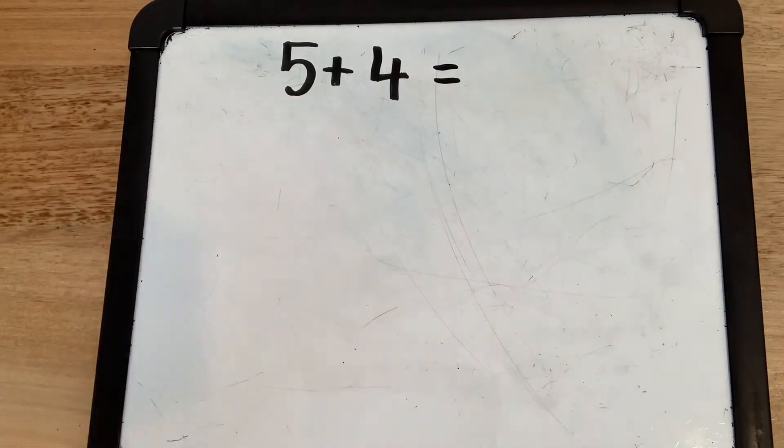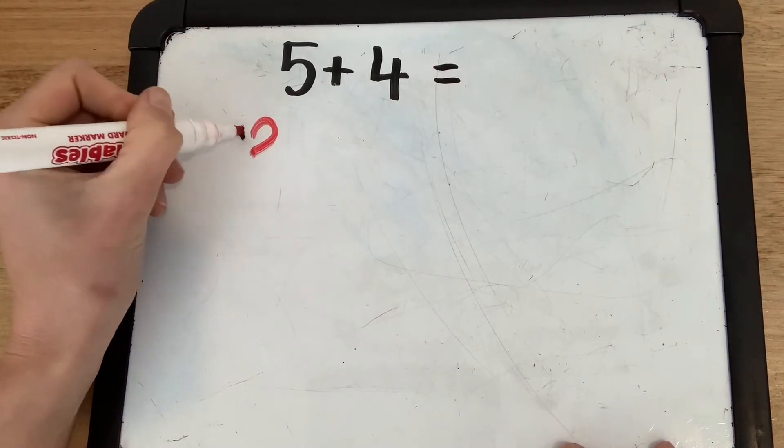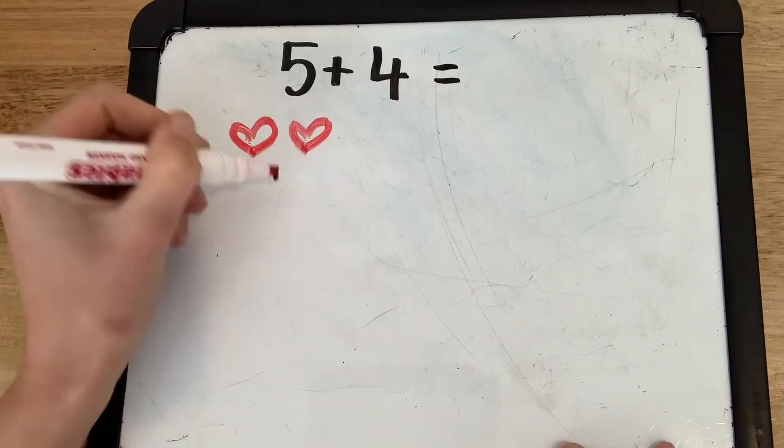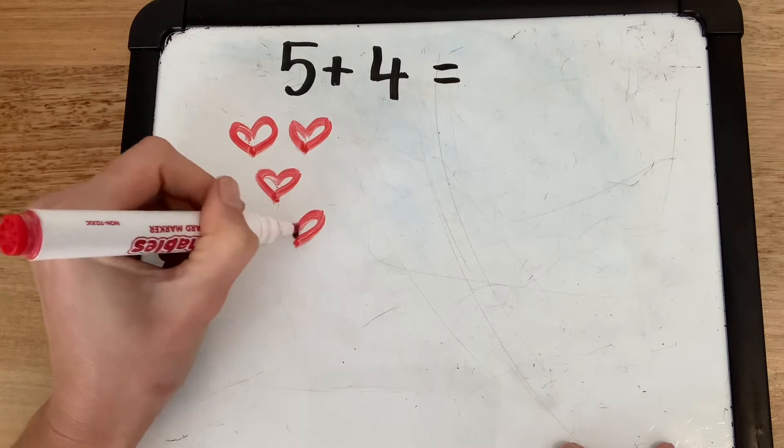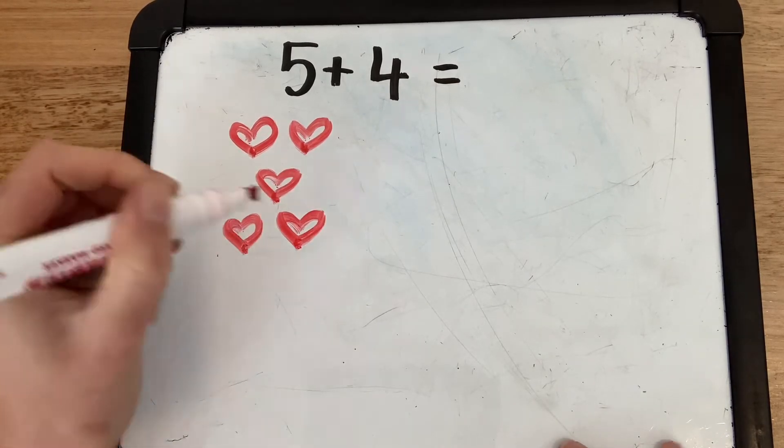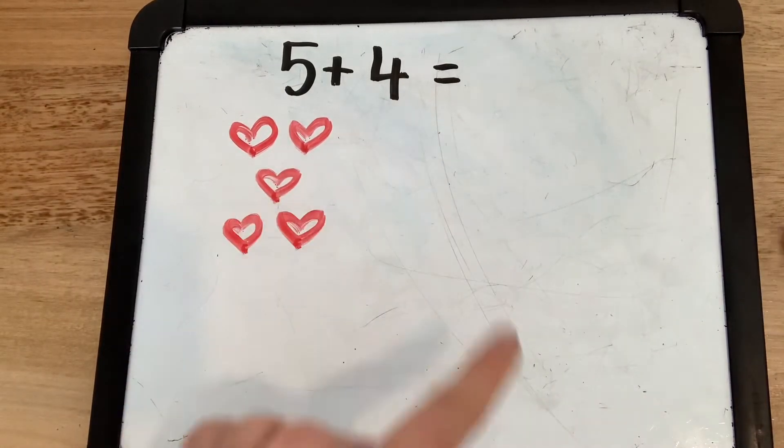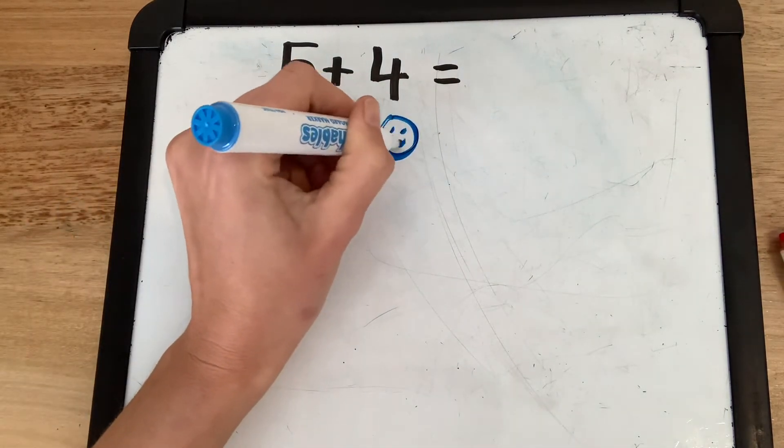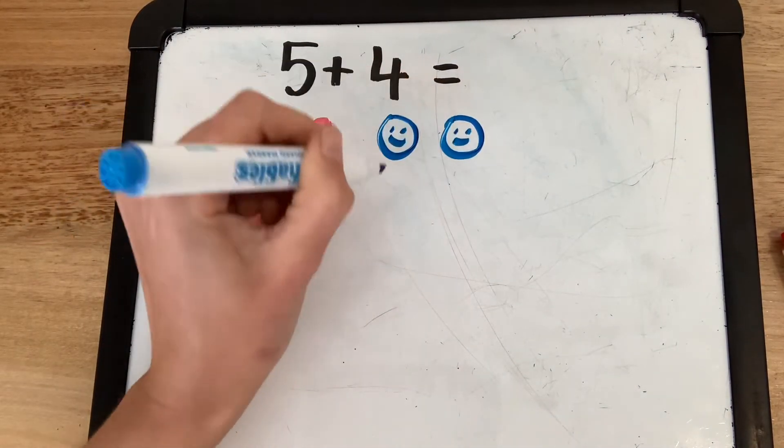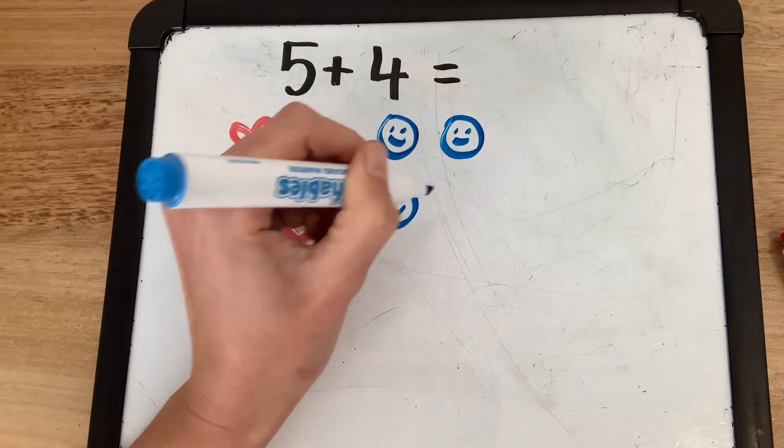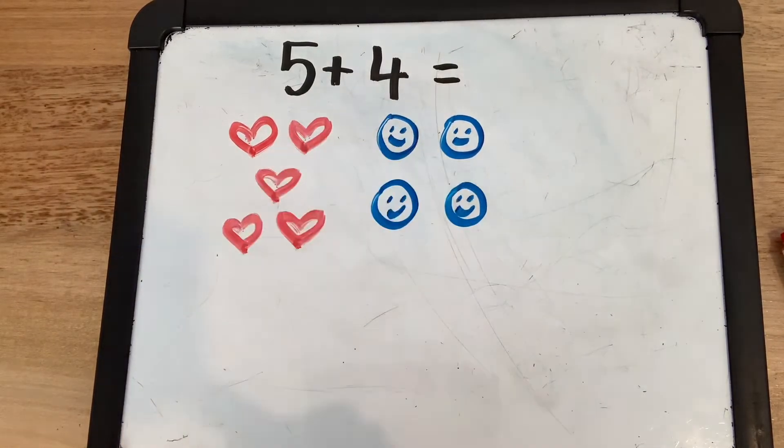So the first number was 5. I'm going to draw 5. 1, 2, 3, 4, 5 and 4. 1, 2, 3, 4.